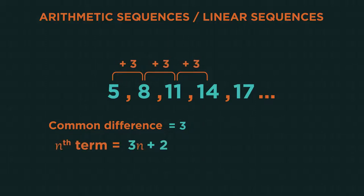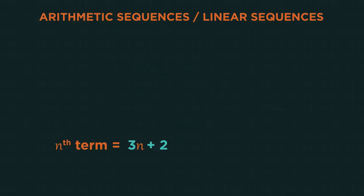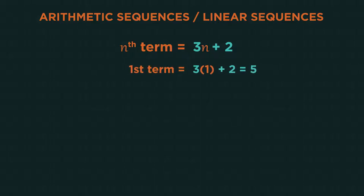The nth term for this sequence is 3n plus 2. We can use this to generate the sequence. The n stands for what term it is. So the first term, n is 1. Substitute 1 into the formula: 3 times 1 plus 2.